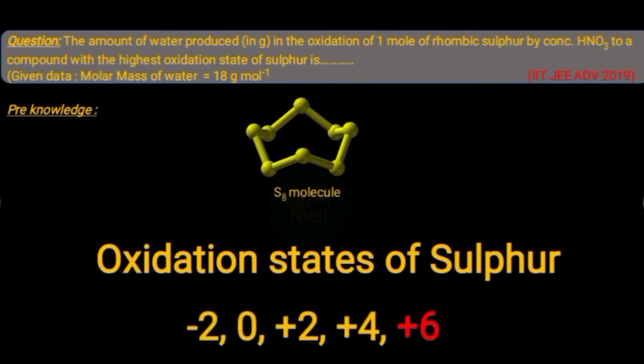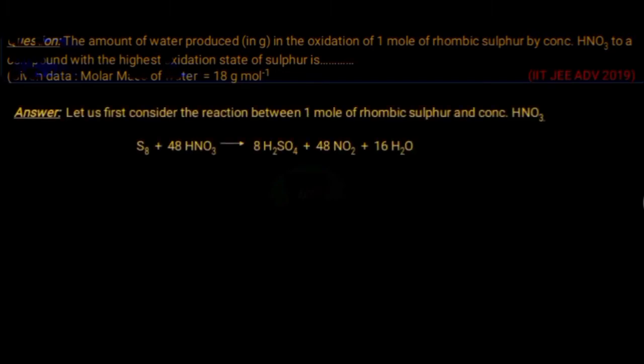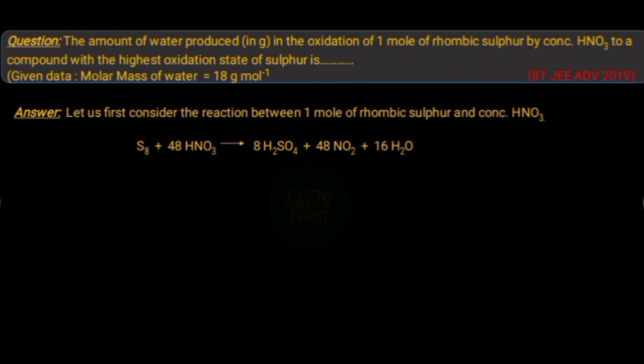The highest oxidation state which sulfur can show is +6. Now consider the balanced equation of the reaction between rhombic sulfur and concentrated nitric acid. Here the product found is sulfuric acid. The oxidation state of sulfur in H2SO4 is calculated and it is found out to be +6, that is the highest oxidation state shown by sulfur.